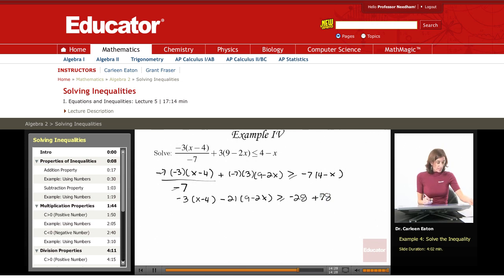So now I just need to do some more simplification. Negative 3 times x is negative 3x. Negative 3 times negative 4 is plus 12. Negative 21 times 9 is negative 189. Negative 21 times negative 2x is plus 42x. And this is negative 28 plus 7x.